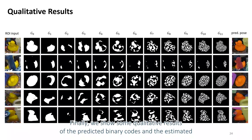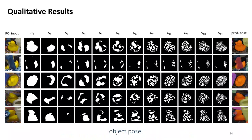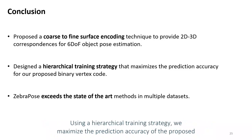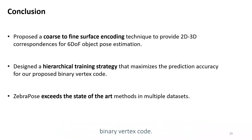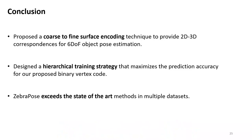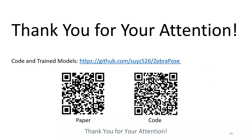Finally, we show some qualitative results of the predicted binary codes and the estimated object pose. To summarize, Zebra Pose is an efficient coarse-to-fine surface encoding technique to provide 2D-3D correspondences for object pose estimation. Using a hierarchical training strategy, we maximize the prediction accuracy of the proposed binary vertex code. Experiments show that our method exceeds the performance of the state-of-the-art. Thank you for your attention.